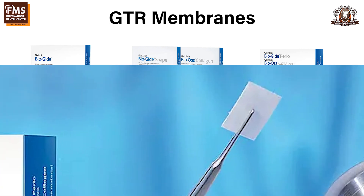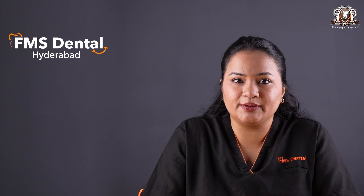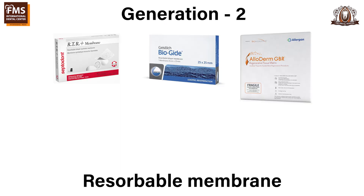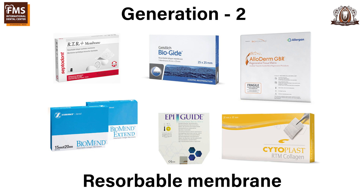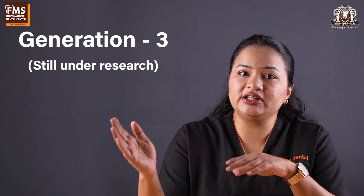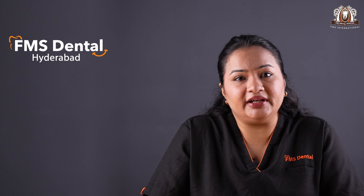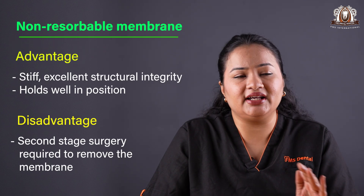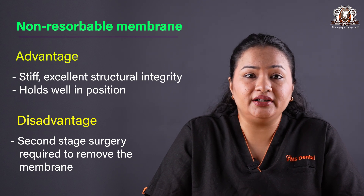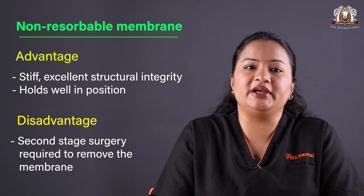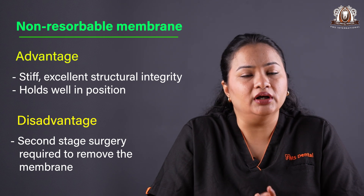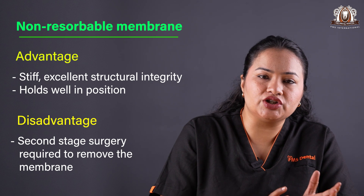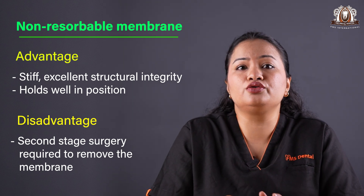Today, we have multiple membranes available for our use. They are categorized as Generation 1 or non-resorbable membranes, Generation 2 resorbable membranes, and Generation 3 resorbable membranes with growth factors. The non-resorbable ones are stiff, they have excellent structural integrity and are hence able to better maintain the space around the defect. However, they do have some shortcomings, most importantly due to their nature, we need a second stage surgery to remove the membrane.